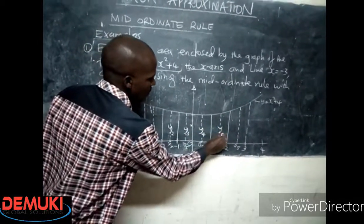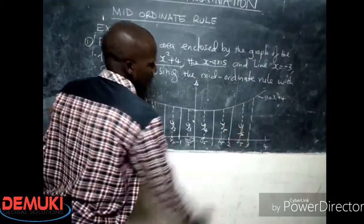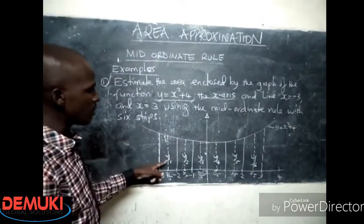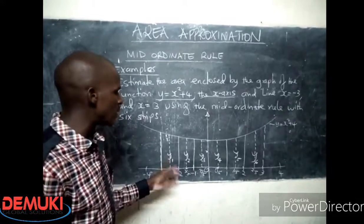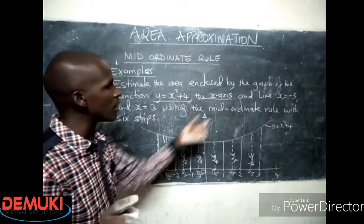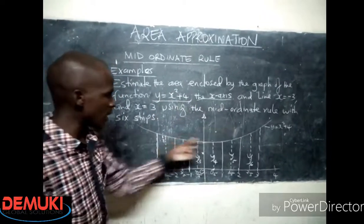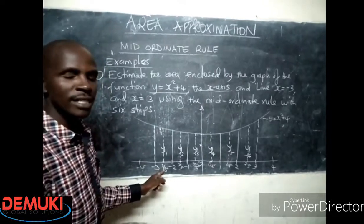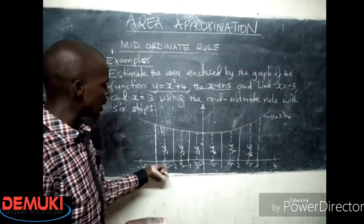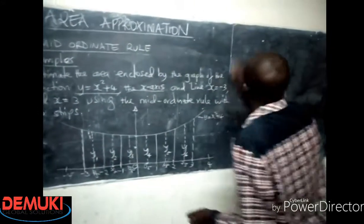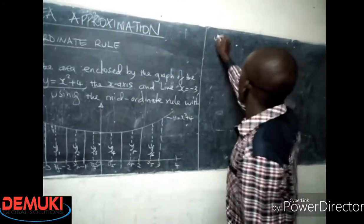So my ordinates are y1, y2, y3, y4, y5, and y6. Now once I've introduced all of them, it's now time to determine what is the value of y1. And how do I get the value of y1? Just get the formula for the function for this curve. This is the equation for the curve, and then the x value is negative 2.5, so you just substitute the x value in the equation.